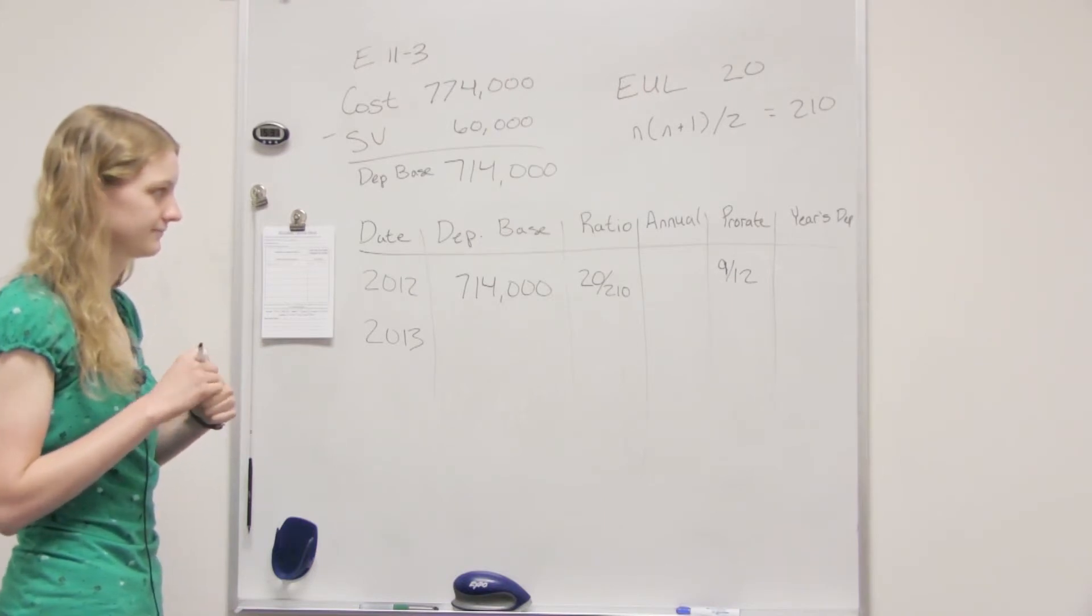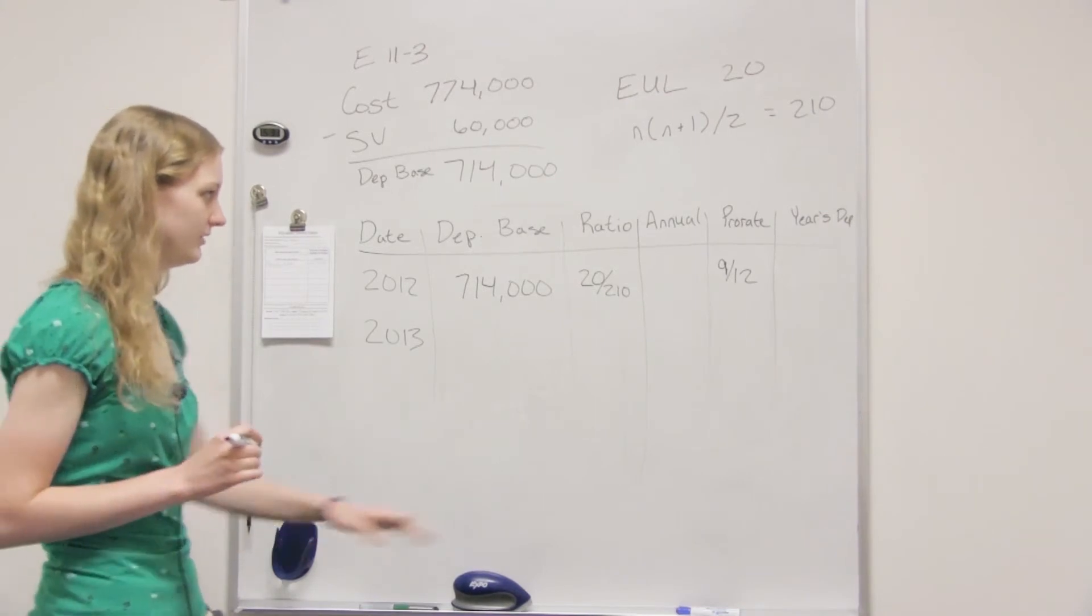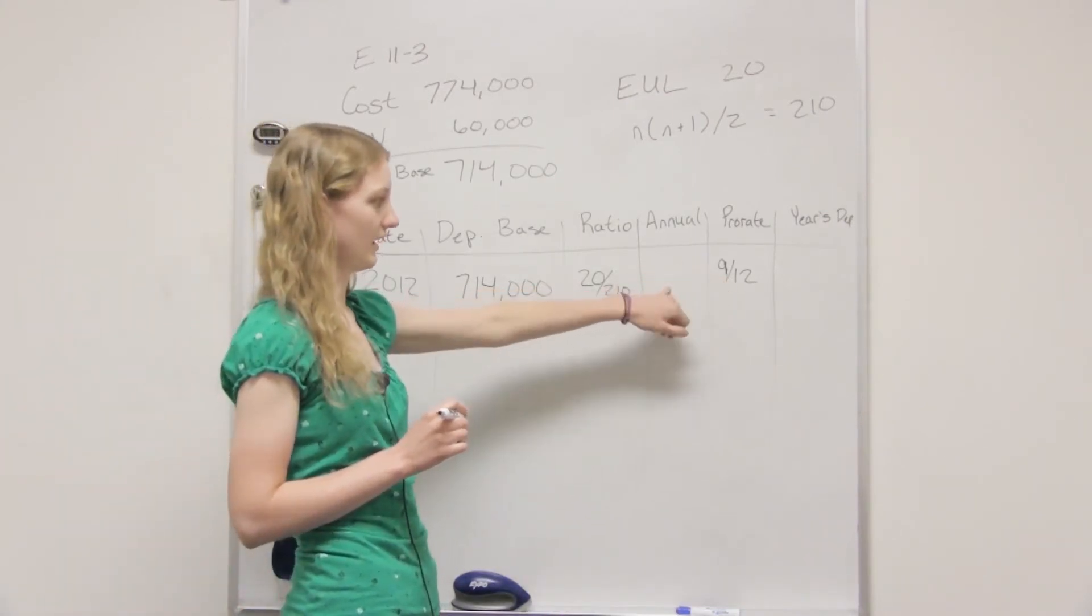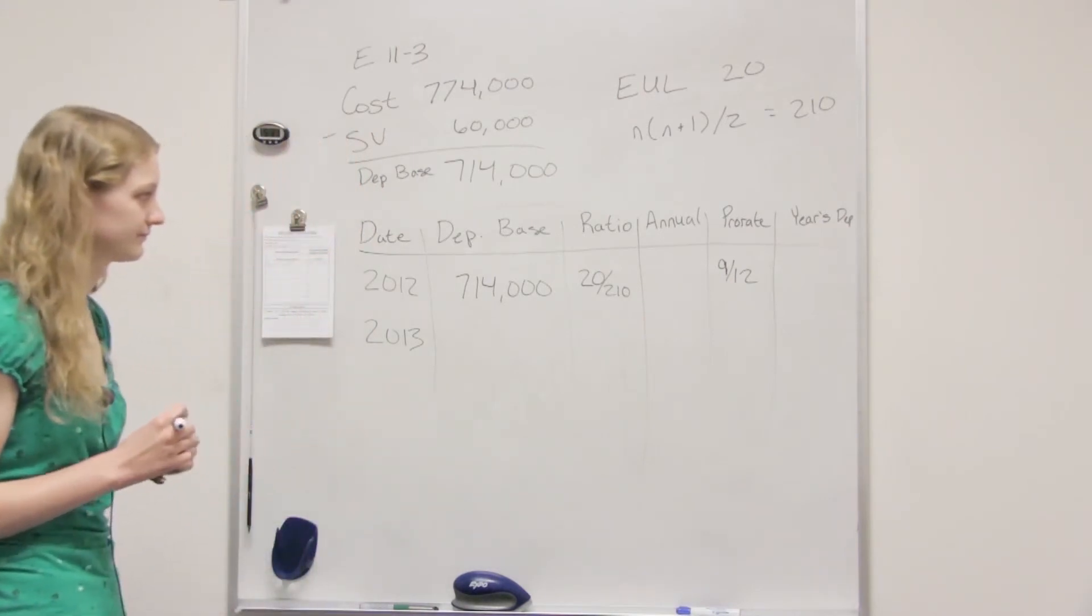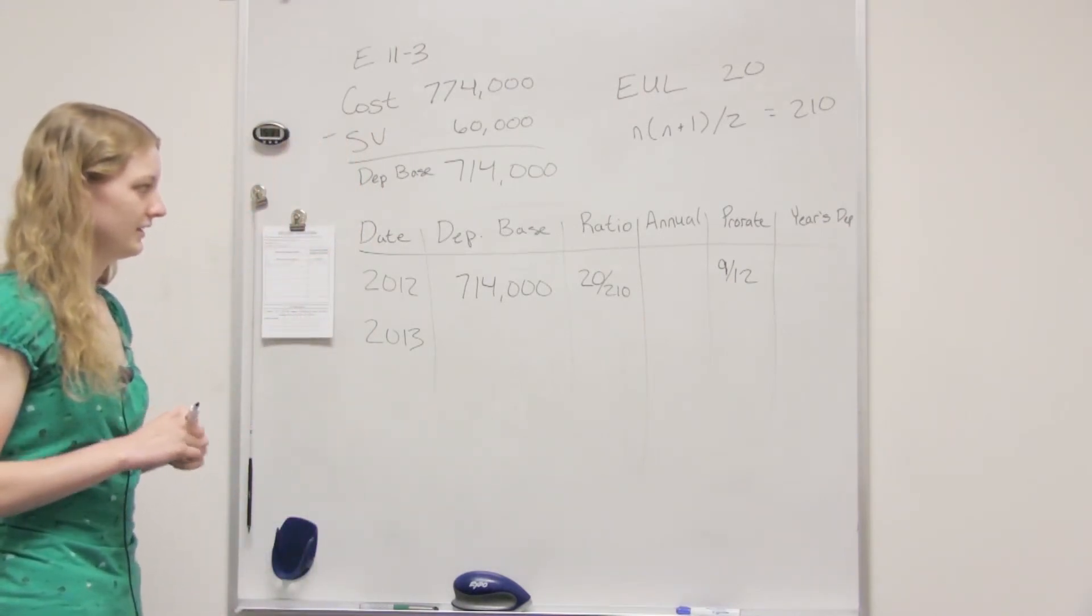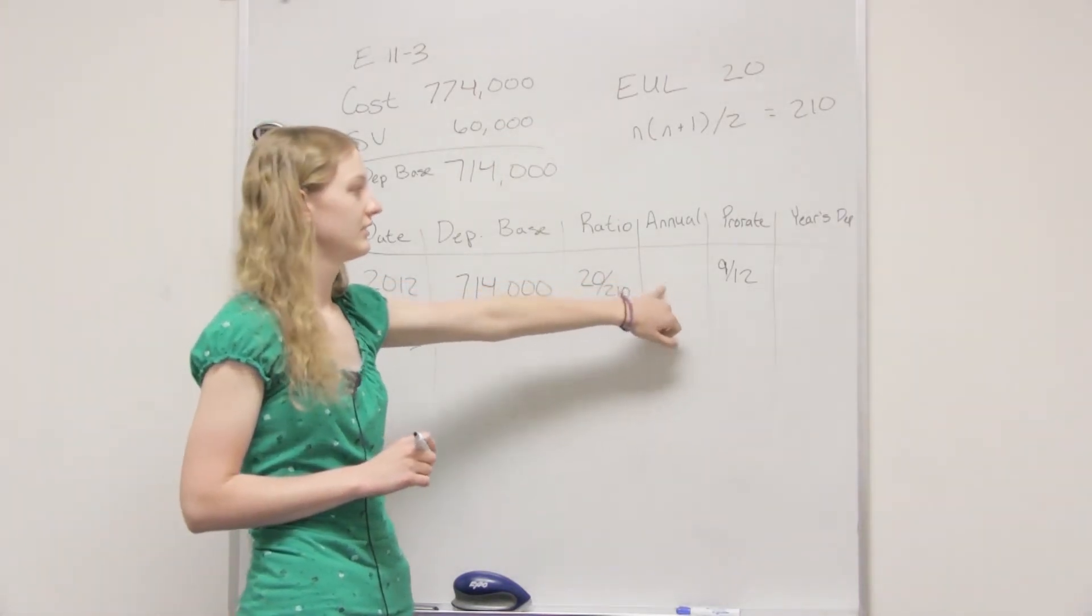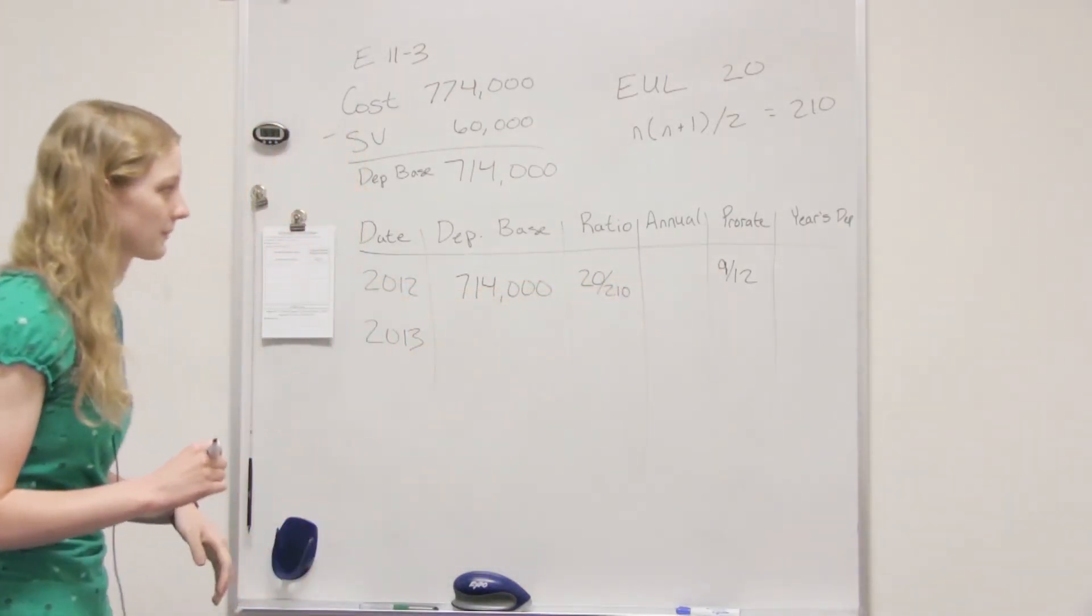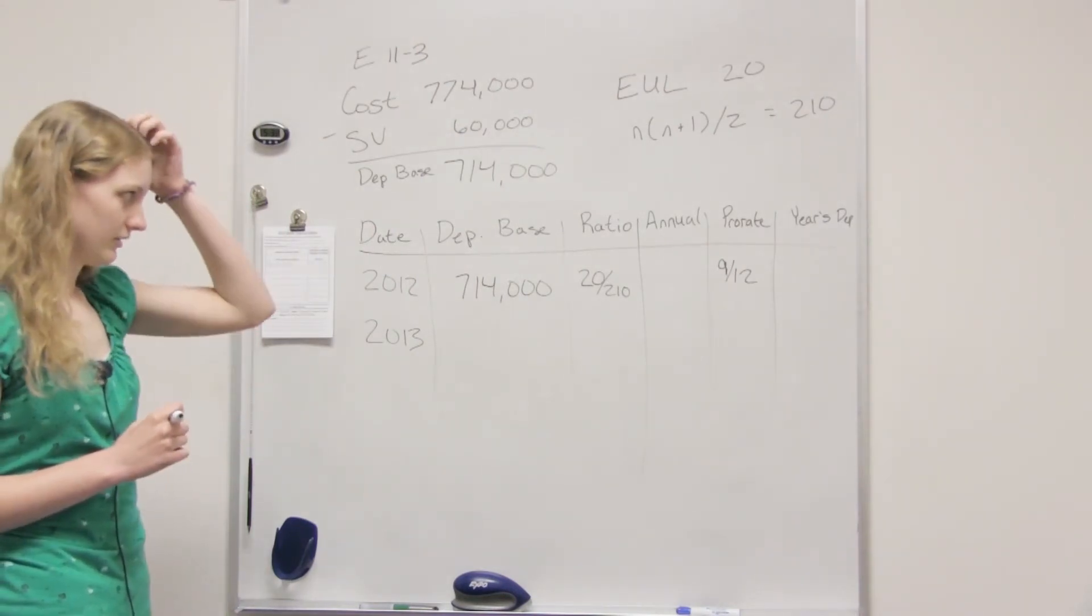So do we not really need the annual? You don't have to have it. But if you did, you would only multiply the prorate times the annual amount. Oh, the annual is always times the... Yeah, because when you multiply these together, it's going to give you the annual. So this is just kind of splitting it up. But yeah, we can ignore the annual for now.